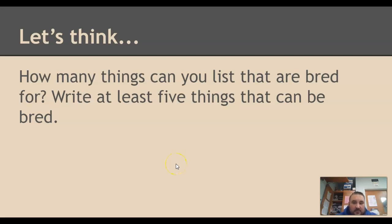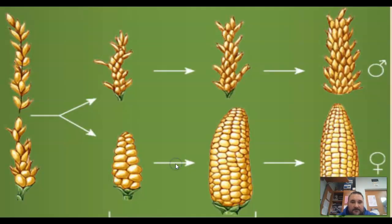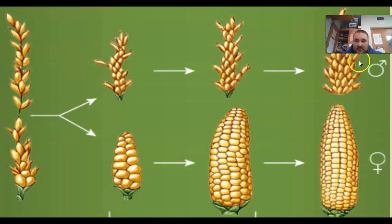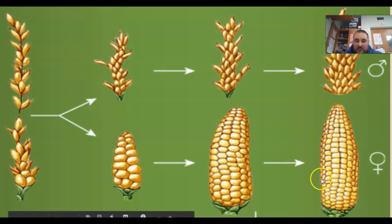Corn, tomatoes, broccoli — all of those things have been bred to be bigger and better. This is a picture of what ancient corn looked like versus modern corn. The top part is like the tassel on top, and this is the actual fruit of the corn that we eat.